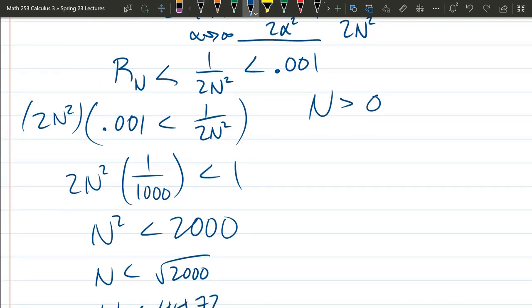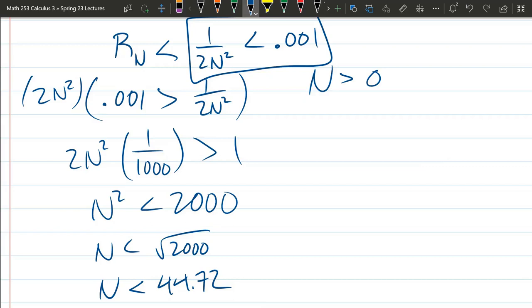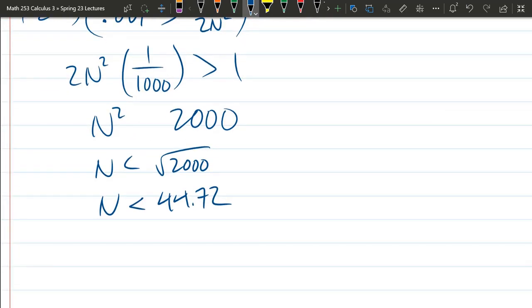So basically, if you look at this right here, the 0.001 is on the greater side of the inequality. So this inequality just flips, and it would flip all the inequalities afterwards as well. So n needs to be greater than 44. You can't have a partial sum of 44.72. So you just let n equal 45 or more. So if you add up 45 terms, you'll have the error smaller than 0.001.